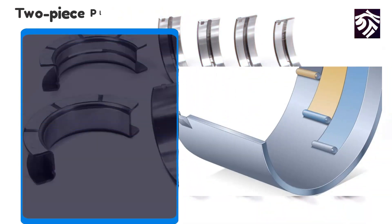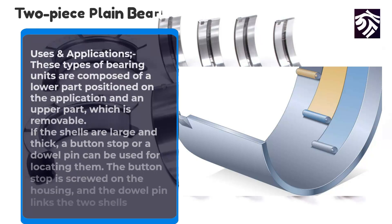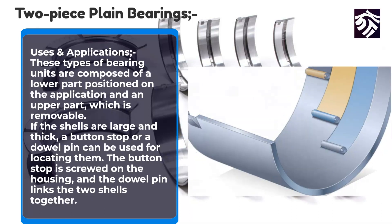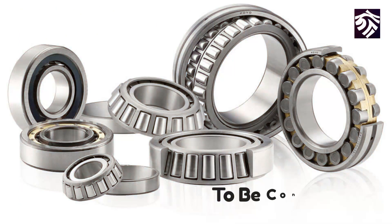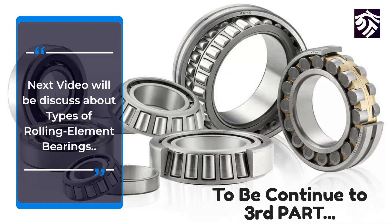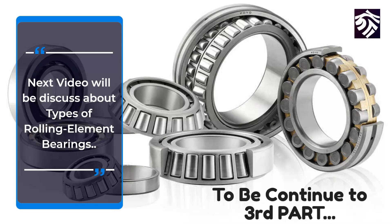Uses and applications: two-piece plane bearing units are composed of a lower part positioned on the application and an upper part which is removable. If the shells are large and thick, a button stop or a dowel pin can be used for locating them. The button stop is screwed onto the housing, and the dowel pin links the two shells together. To be continued — the next video will discuss types of rolling element bearings.